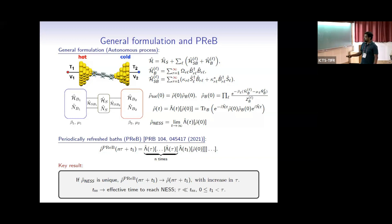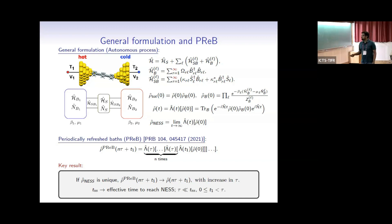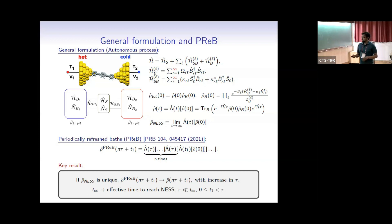This is more a physical argument than a rigorous proof. If you have a big system coupled to baths only at some places, there can be an effective time to the steady state T_SS. You might get convergence for a value of τ much smaller than T_SS. You can choose τ₁ between 0 and τ, and if this happens, simulating this dynamics becomes much simpler than simulating the full dynamics — and this is one way to reconstruct the full dynamics.